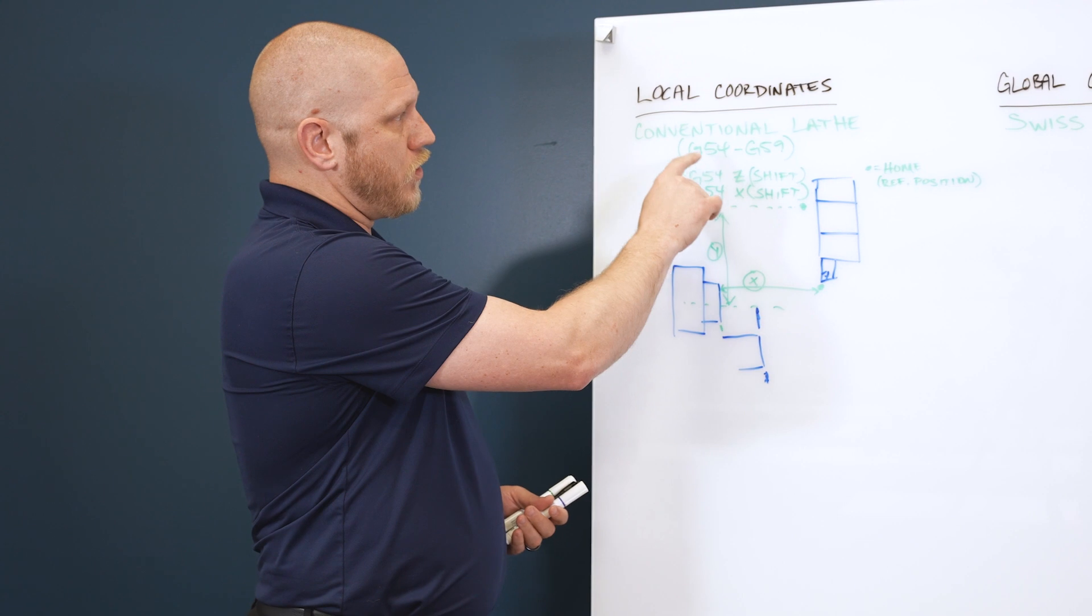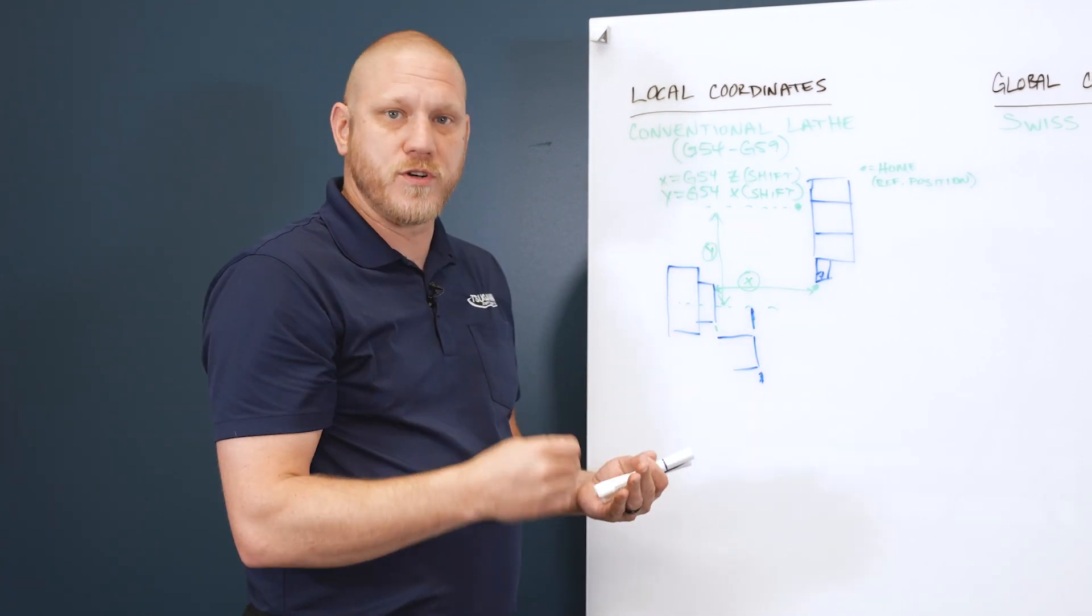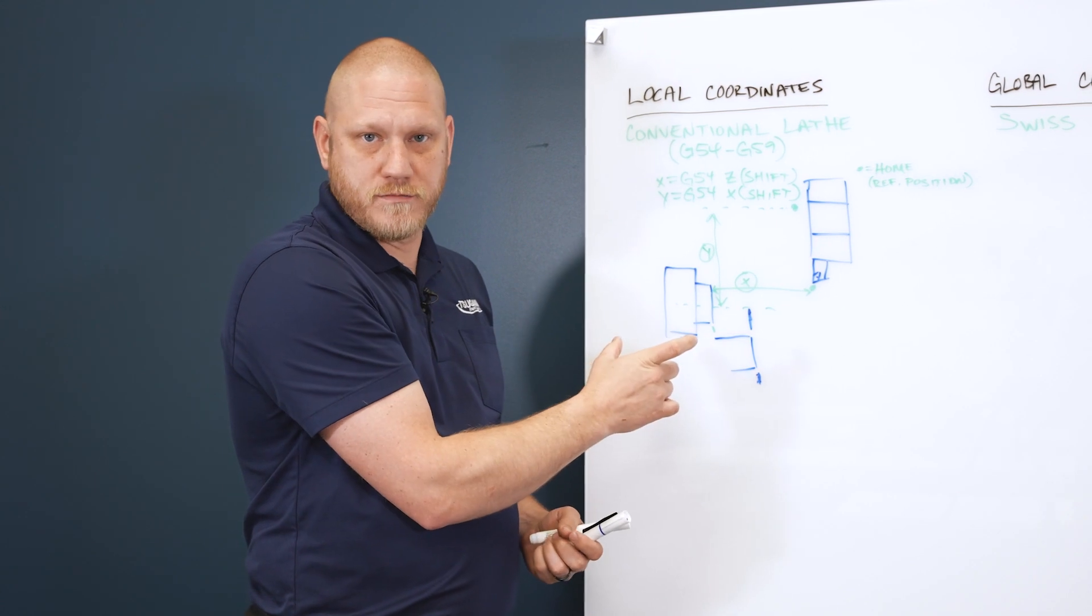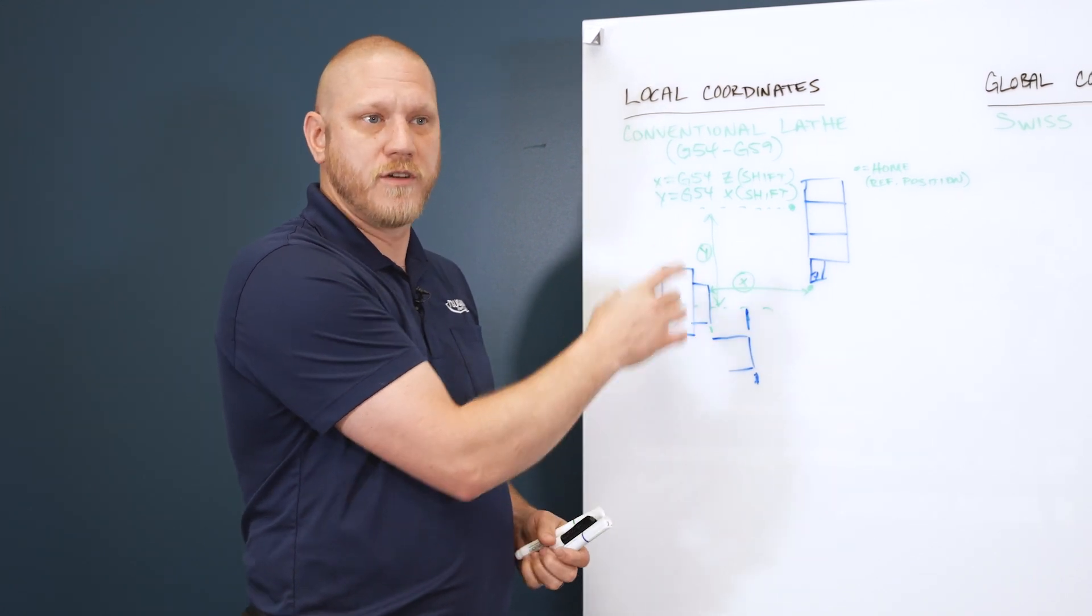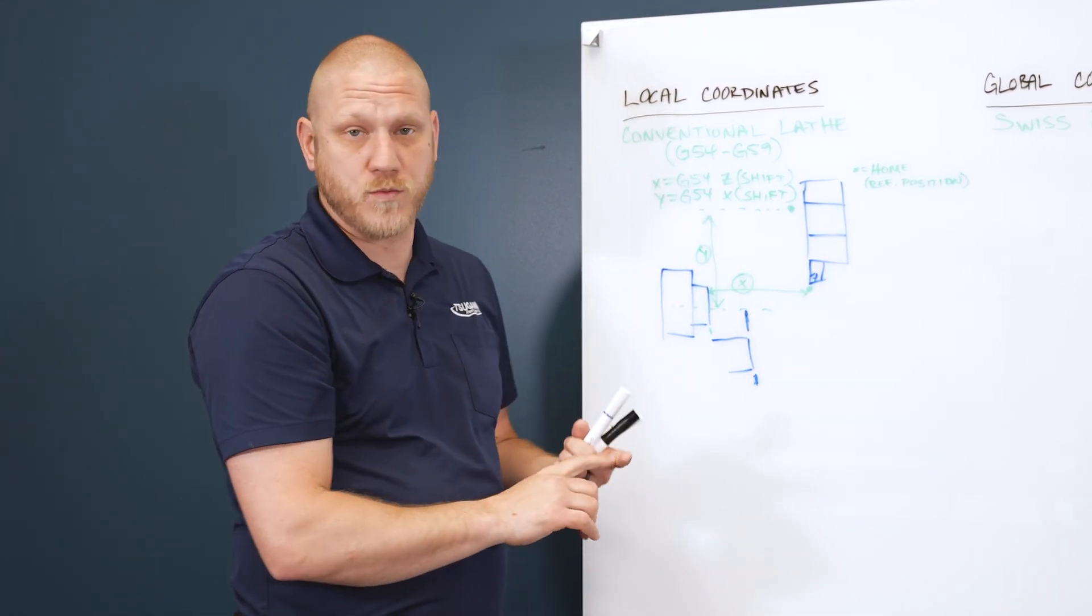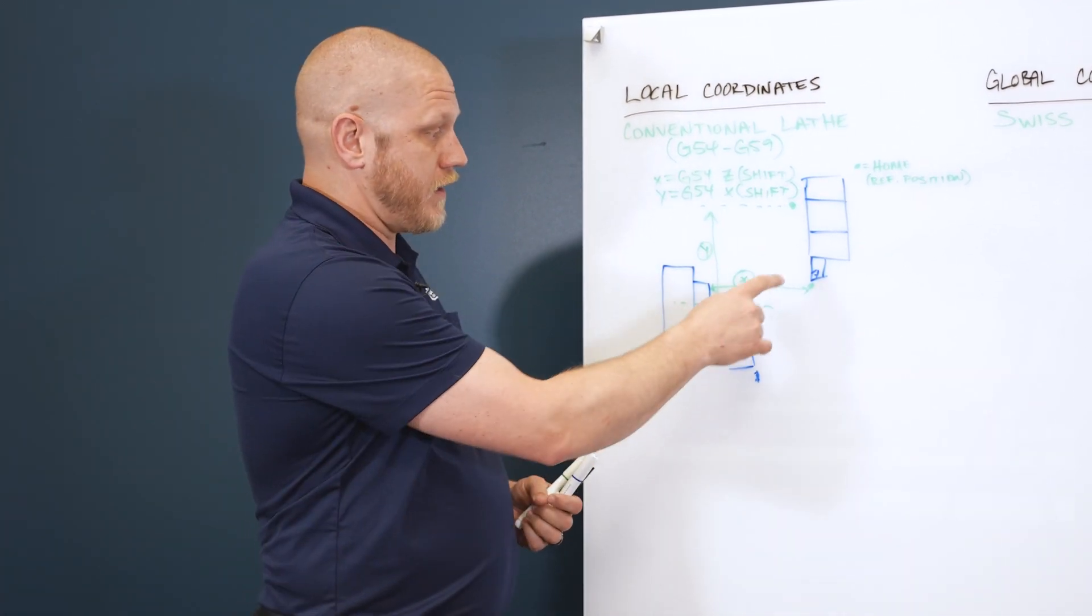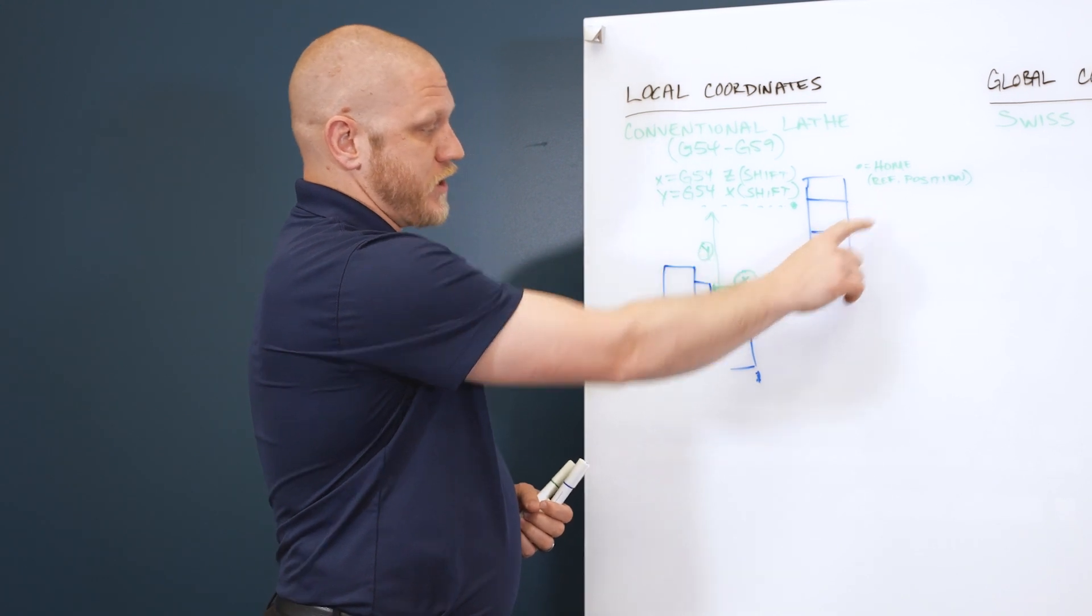All a local coordinate does, G54 to G59, is shift from that reference position. It gives you a new zero for a certain axis, whether you choose X, Y, or Z, or any other axis. It references from the home position.